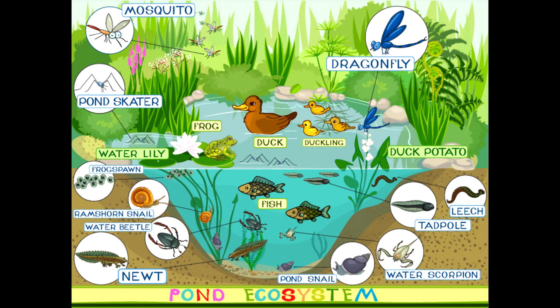This pond ecosystem is a good example of the type of thing you might see for an exam question. They show you all the different types of species and this usually would be accompanied by some kind of food chain or food web.